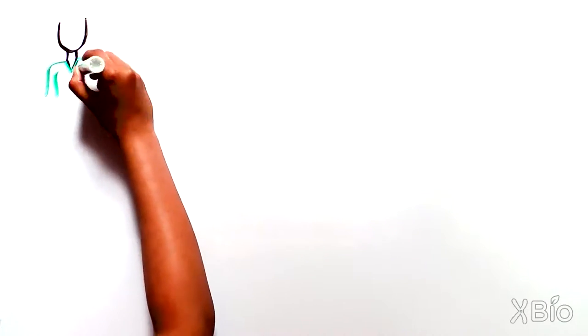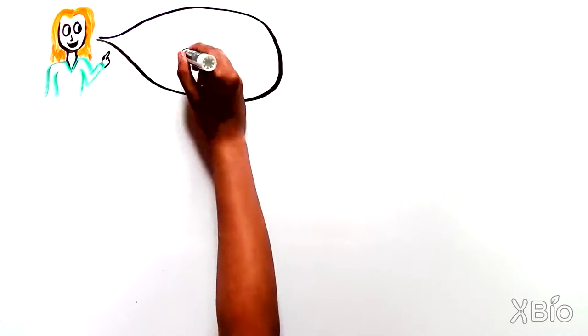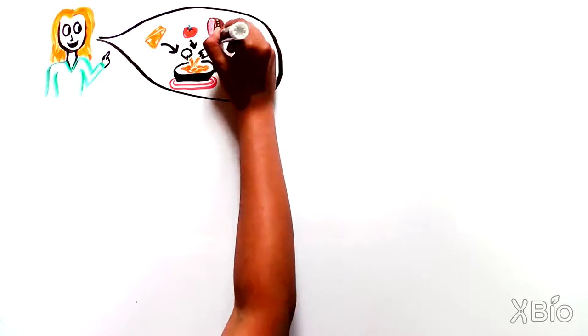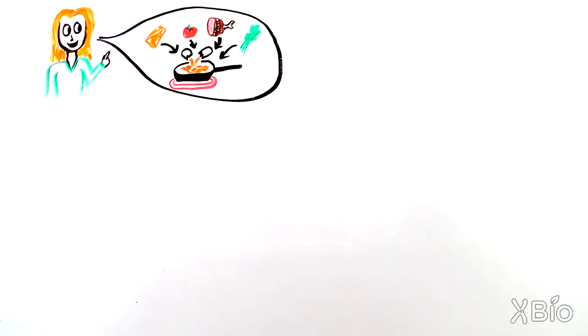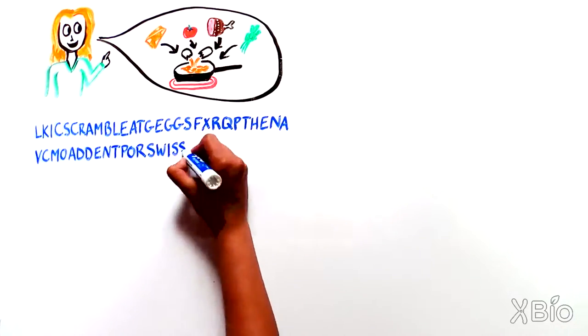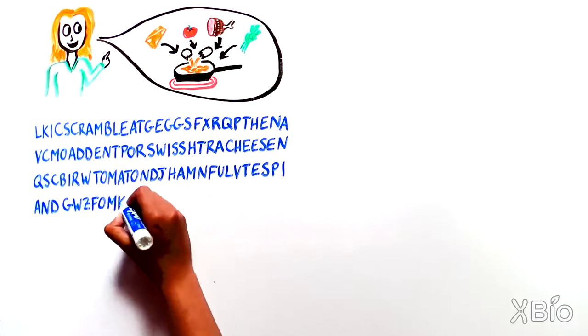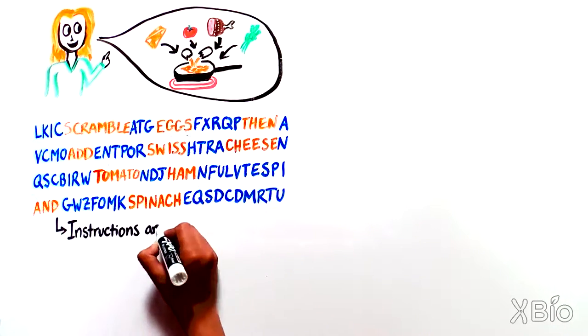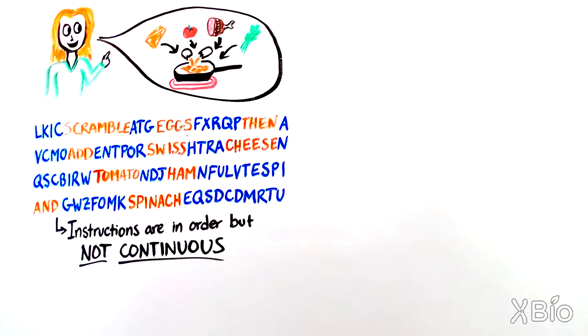Let's say you are making brunch for your friends, and one person asks you to scramble eggs, then add Swiss cheese, tomato, ham and spinach. It seems simple, but in our cells, this sentence would look like this. The words in those instructions are listed in order, but they are not continuous. There's a lot of gibberish in between, so the sentence doesn't make sense.